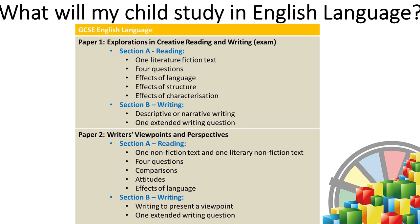The second language exam, paper two, requires students to look at non-fiction texts. They will have two sources and be asked a series of questions looking at how writers present their thoughts, opinions and attitudes, and they will be asked to compare the two sources. In the second section, students will create their own non-fiction texts — they may be asked to write a speech, a letter or an article in which they put forward their own views and opinions. Both of these exams are weighted at 50% each, so they are equally as important as each other.